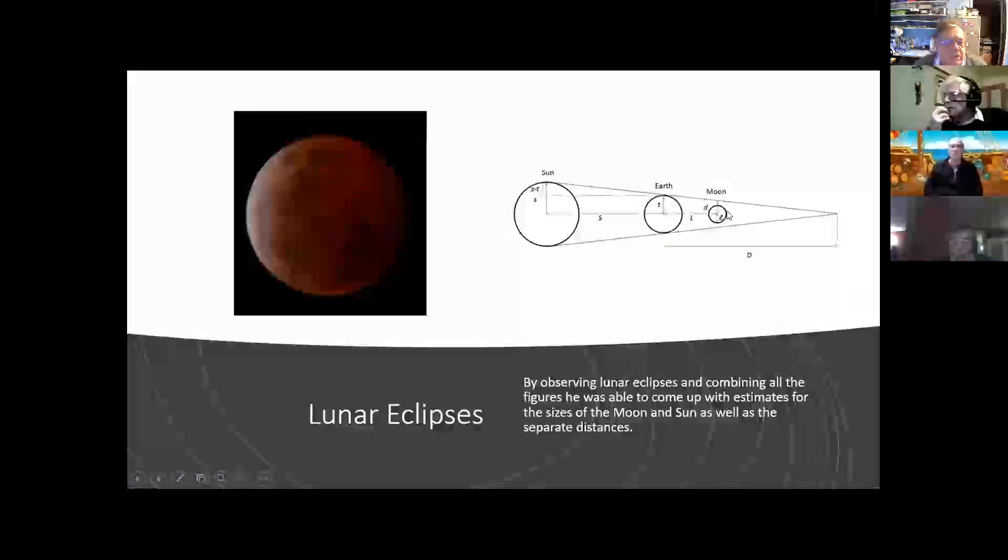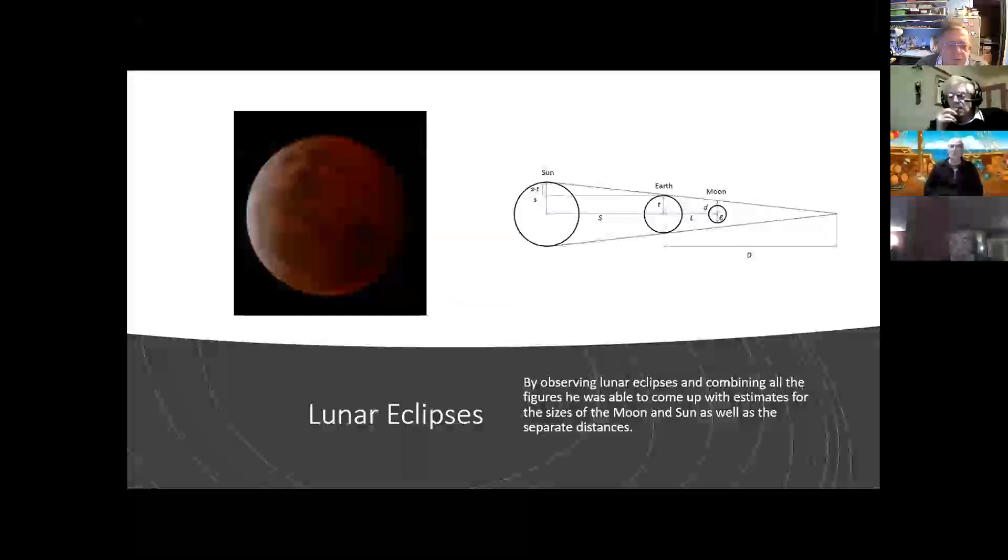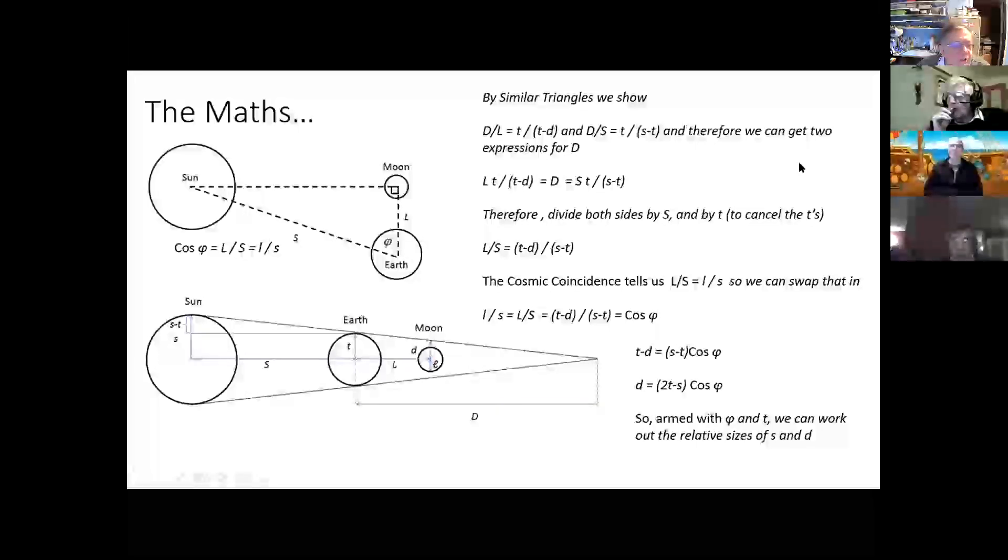But then he also used the idea of lunar eclipses, and was able to take the complicated geometry that we've got, where the Moon goes into the shadow of the Earth. And we've got the distances all marked out with different letters on this diagram here, and you can work through the mathematics of this. It's a little bit complicated, but here it is. Basically, here's his first assertion that the angle here of 87 degrees tells us something about the shape of this triangle.